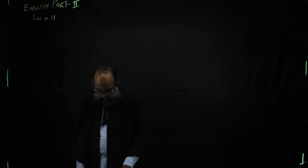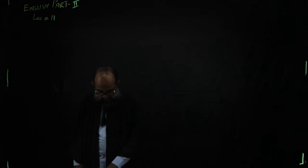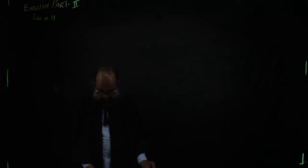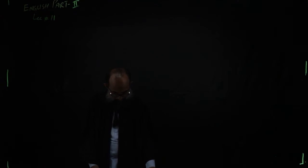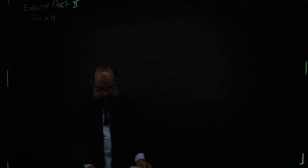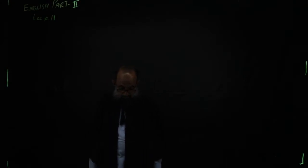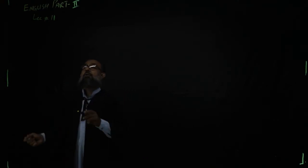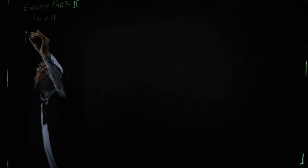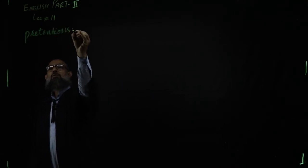آج ہم Chapter Number 3 کے synonyms discuss کریں گے جو کہ previous papers میں مختلف boards کے آئے ہوئے ہیں۔ Chapter Number 3 کے اندر دیکھیں: 'The house itself was ugly and pretentious' — لفظ ہے pretentious۔